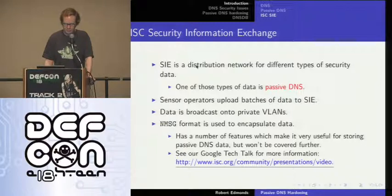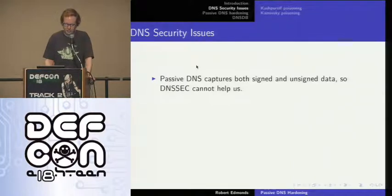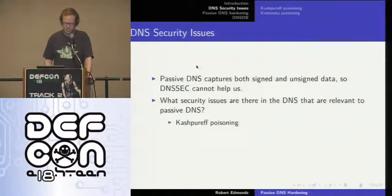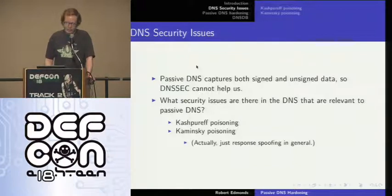This is the end of our introductory material. We'll move on to some DNS security issues and the analogs they present in passive DNS. Unfortunately, nothing short of universal DNSSEC deployment really helps us, since passive DNS operates at a lower level than DNSSEC. So we have to handle signed and unsigned data as securely as possible. The most important DNS security issues for passive DNS are cache purif poisoning — an old, easily defeated type from the 90s — and Kaminsky poisoning, which uses spoofed response packets.